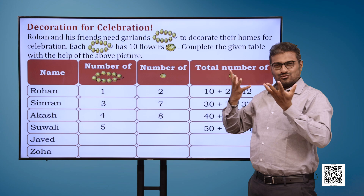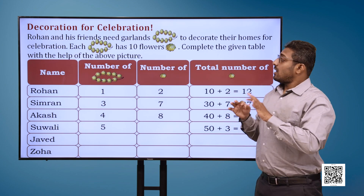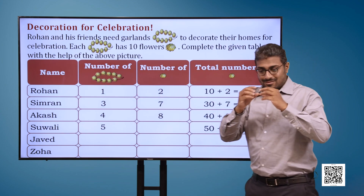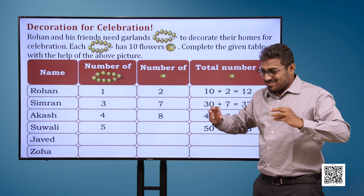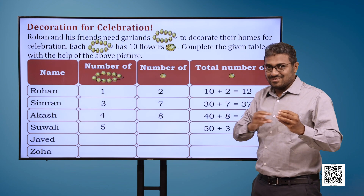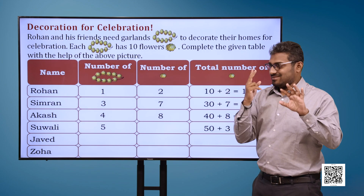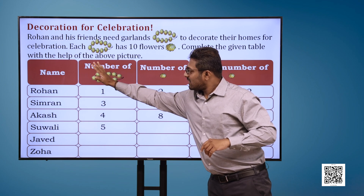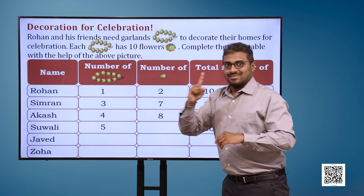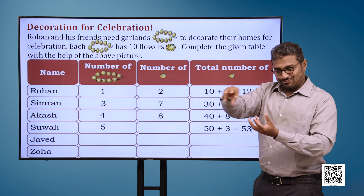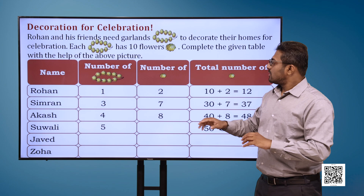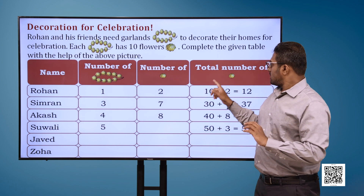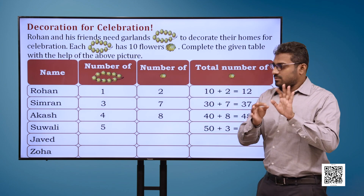Now we have a table with 4 columns. The first column is Name, the second is Number of Garlands, the third is Number of Flowers, and finally the fourth one is Total Number of Flowers.